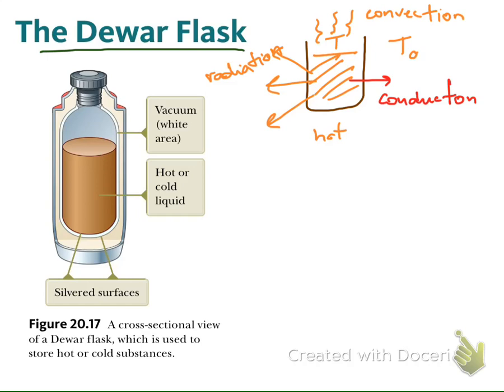When energy is lost from the hot water, the temperature will decrease. Eventually, when the system reaches equilibrium, the temperature of the water equals the temperature of the surroundings. To prevent the change in temperature, we have to eliminate all of these processes — we have to block conduction, convection, and radiation. That is the principle of the Dewar Flask.